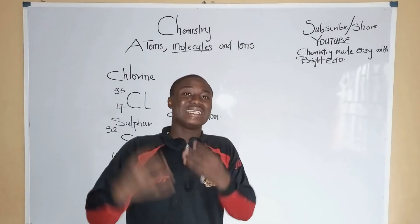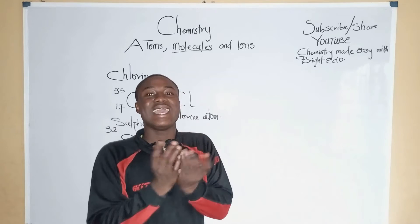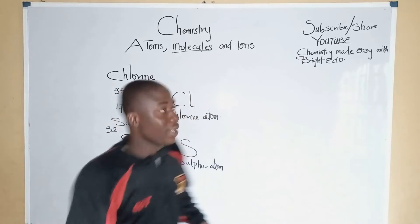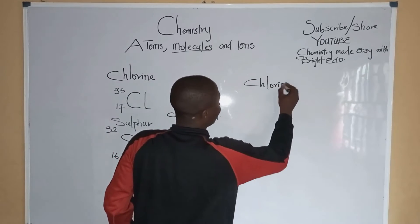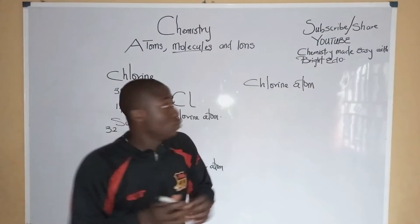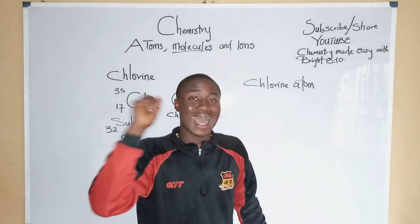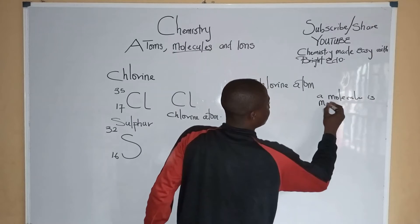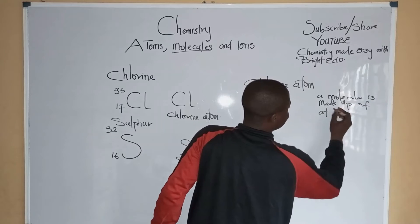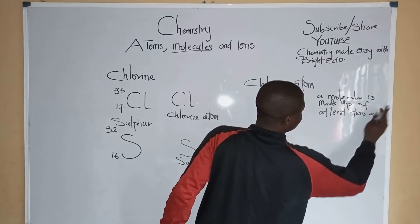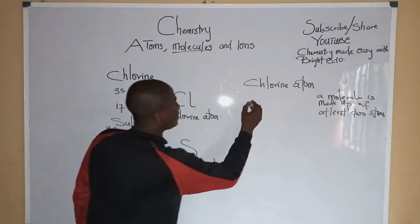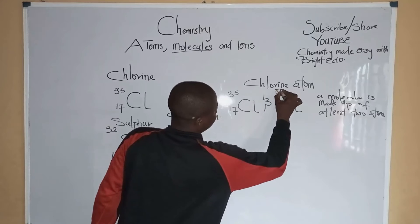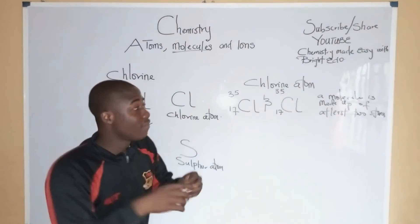But now, talking about molecules — what are molecules? Molecules are the smallest particle of a substance that can exist alone or independently and still retain that same chemical identity of that atom. Take note: for a molecule, a molecule is made up of at least two atoms.